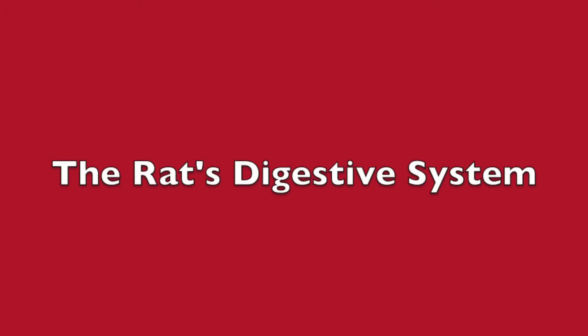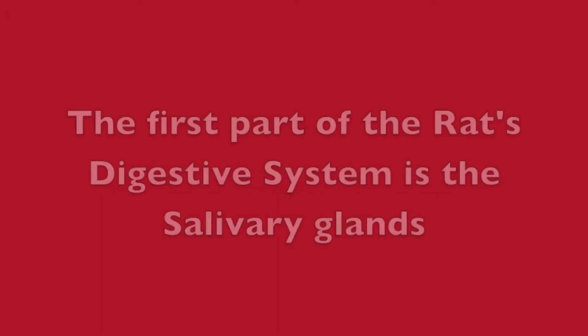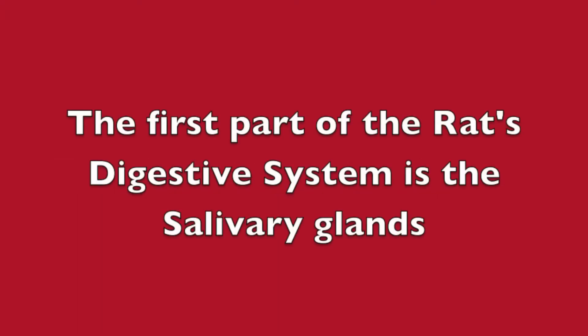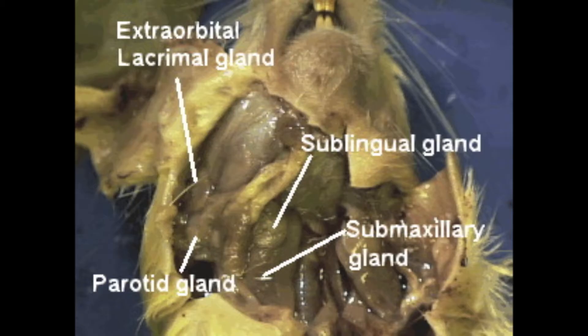The rat's digestive system. The first part of the rat's digestive system is the salivary glands. There's the parotid gland, the submaxillary gland, the sublingual gland, and last but certainly not least, the extraorbital lacrimal gland.